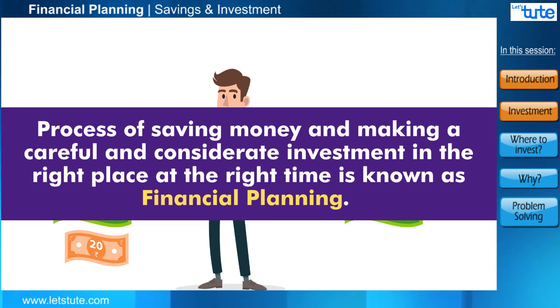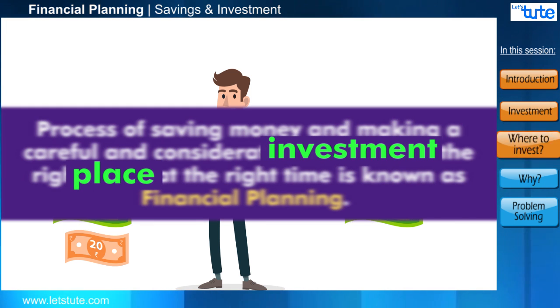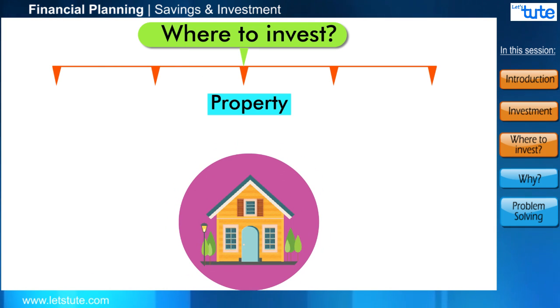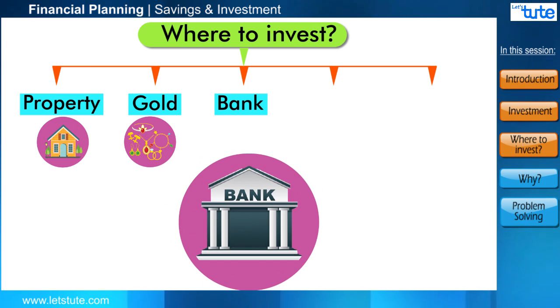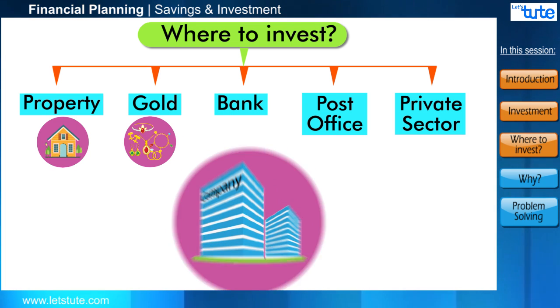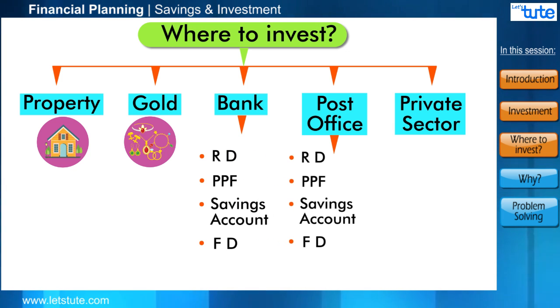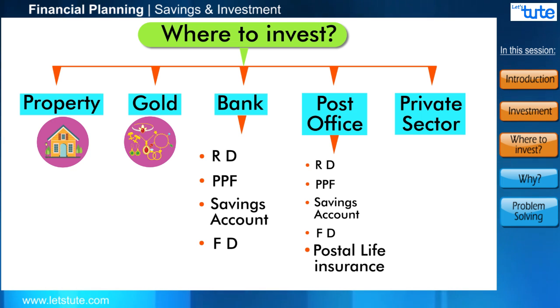So what are the places where you can invest money? You can invest in property, real estate like buying a house, gold, bank, post office, or private sector. In banks you can make a recurring deposit, PPF, savings account, fixed deposits, etc. In post office you can have the same things and more, like postal life insurance.